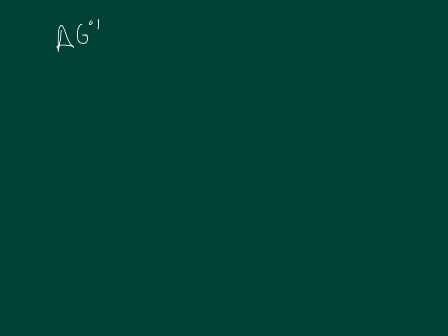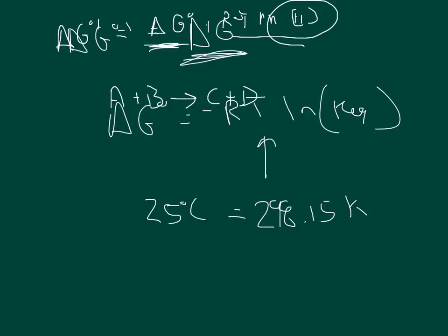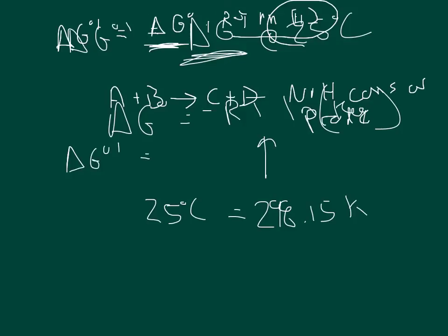One important caveat: delta G biochemical standard state is only different from delta G standard state when hydrogen is being produced or consumed. If hydrogen is not in the reaction quotient — for example, A + B → C + D with no hydrogen — then the hydrogen ion concentration doesn't change, and delta G biochemical standard state equals delta G standard state.